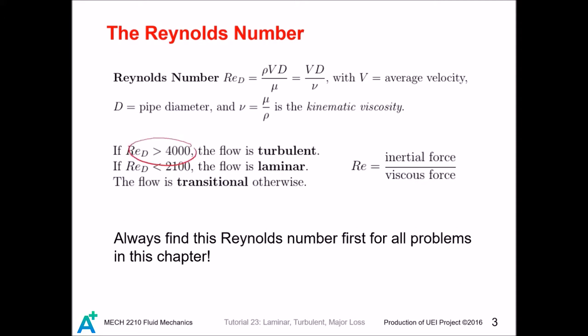These limiting values, 4000 and 2000, are only for pipe flows. You will see other numbers in the next chapter, as well as in heat transfer. The Reynolds number plays a central role in fluid dynamics because it represents the ratio of inertial force to viscous force. This can be easily remembered, since you can see mu in the bottom and rho in the top. The Reynolds number distinguishes turbulent flow from laminar flow, and turbulent flow and laminar flow are so different, you must always calculate the Reynolds number before we solve any problem in this chapter.